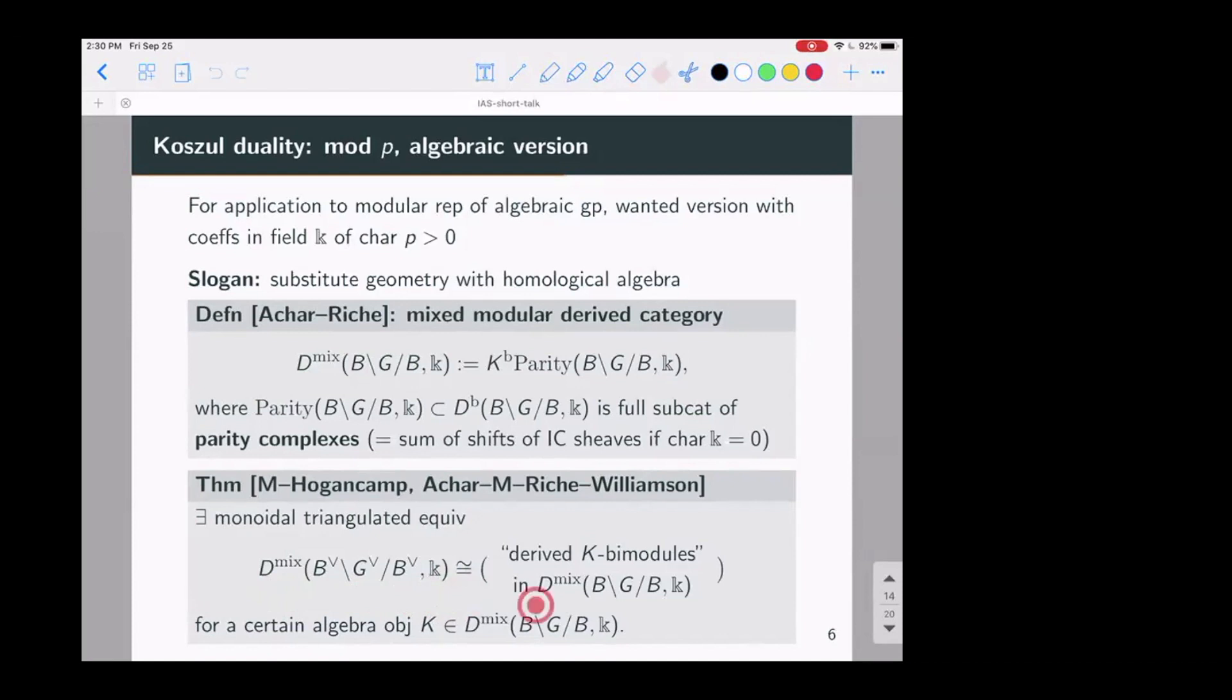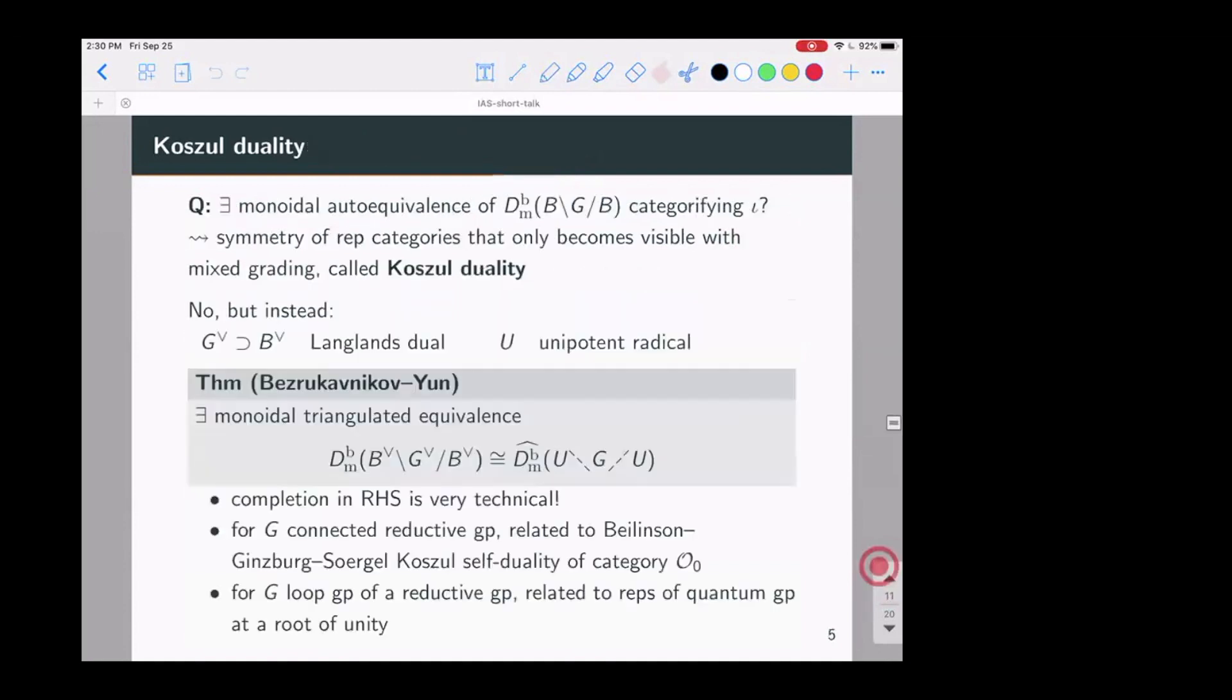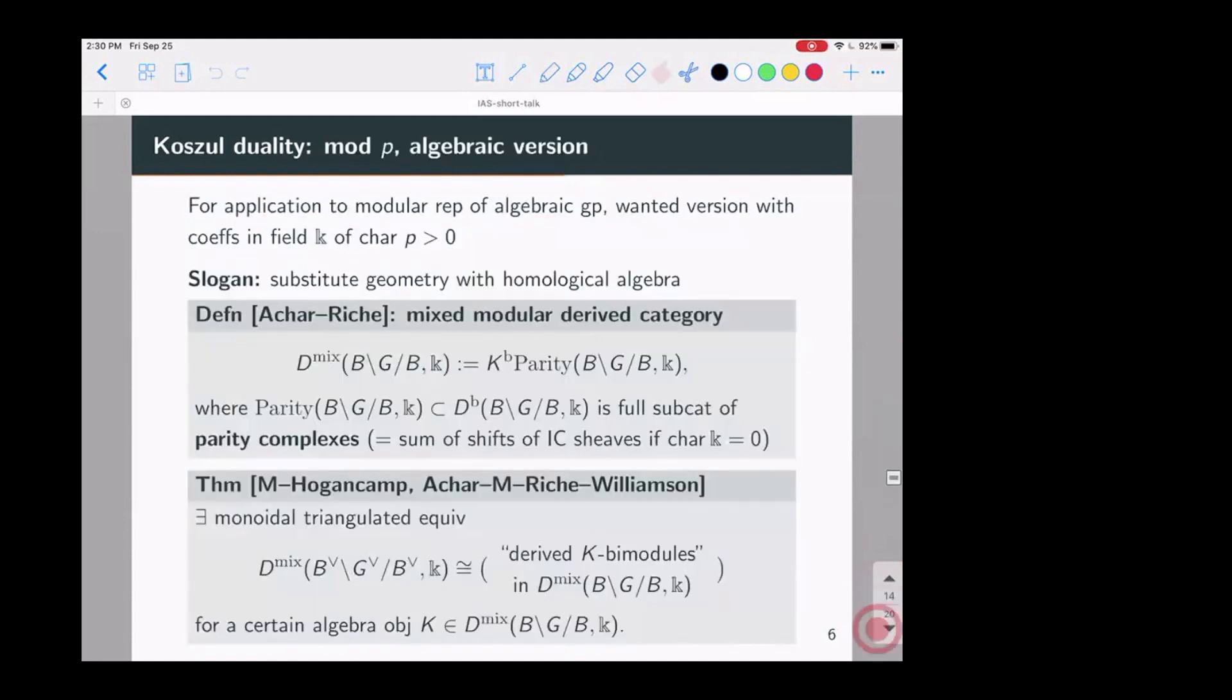I still have the Hecke category for the Langlands-Duo on the left hand side. But on the right hand side, I instead take derived K-by modules in the Hecke category for G, where K is some algebra object in the Hecke category. So I replaced this complicated geometry that was present on the right hand side by this homological algebra, which still is complicated.